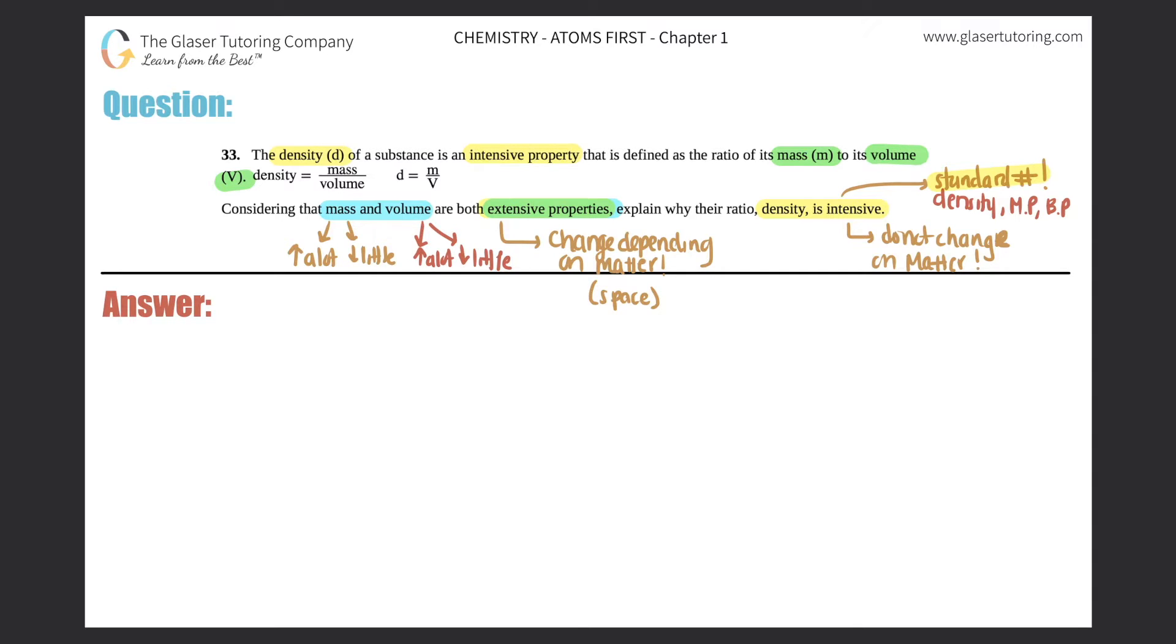But now let's see why if we put together two extensive properties we get an intensive property. So let's do a nice little drawing here of - look at that, that's nice - of my substance A. And I'm just going to give random numbers here, no rhyme or reason, but it's got to have a mass and it's got to have a volume.